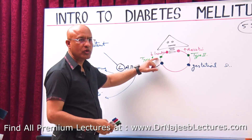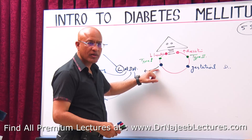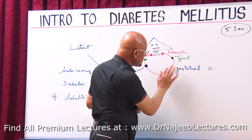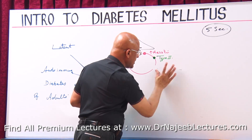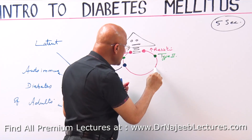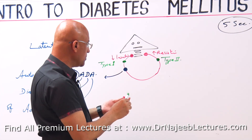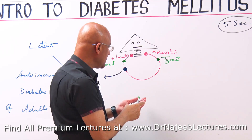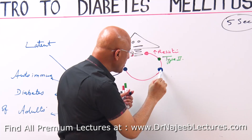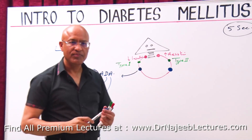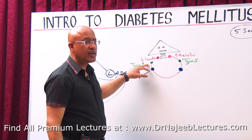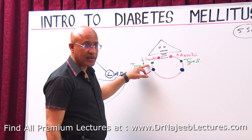This very late onset of a Type 1-like disease is called LADA. Both Type 1 and LADA involve autoimmune destruction of beta cells. Similarly, there is a condition very similar to Type 2 diabetes but developing at a younger age.